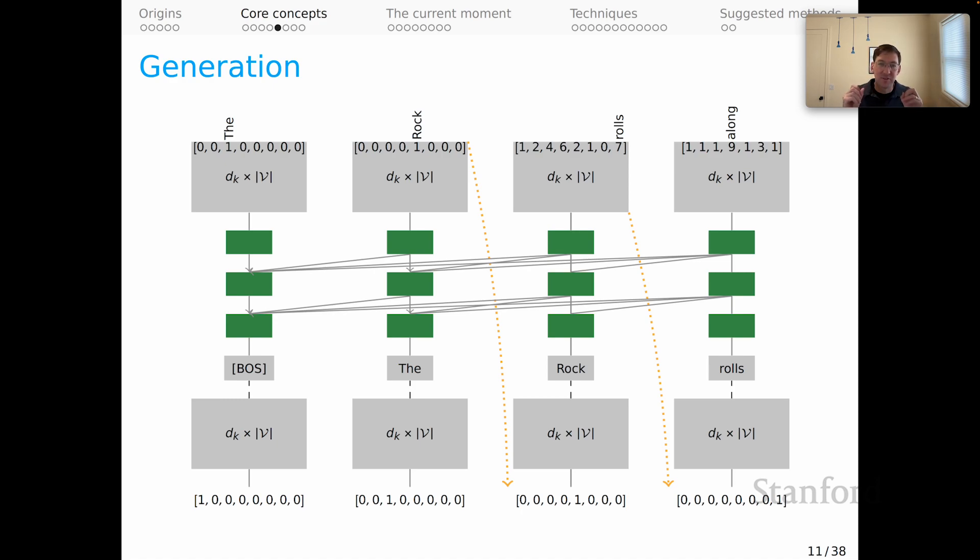And we are using our own rule to decide what token that actually corresponds to. What I've depicted here is something that you might call greedy decoding, where the highest scoring token at each time step is used at the next time step. But again, that just reveals that there are lots of decision rules that I could use at this point to guide generation.